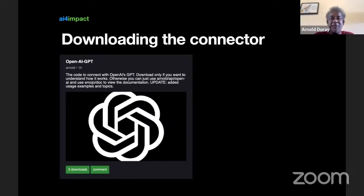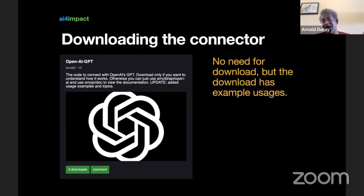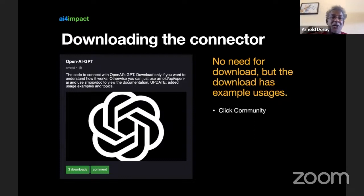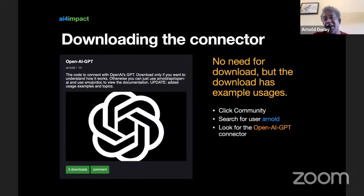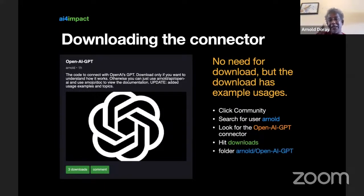There is also the GPT connector available on my projects page under Community. There's no need to download anything from the community page, but the download does have usage examples — I've put in six examples you can try out. The examples are in the same bundle as the source code that creates the connector. Click on Community, search for my username 'arnold', look for 'OpenAI GPT Connector', and hit the green download button.